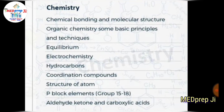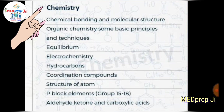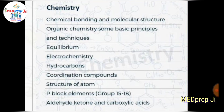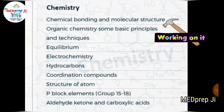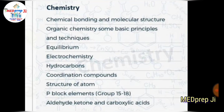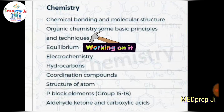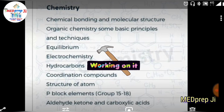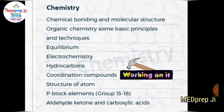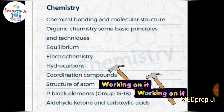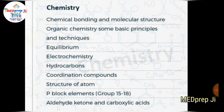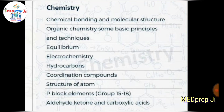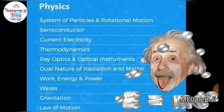In Chemistry: rank first goes to Chemical Bonding and Molecular Structure — a very important topic; rank two goes to Organic Chemistry: Some Basic Principles and Techniques, which is the core of organic chemistry, do not skip this; rank third goes to Equilibrium; rank four goes to Electrochemistry; rank five goes to Hydrocarbons; rank six goes to Coordination Compounds; rank seven goes to Structure of Atom; rank seven goes to P-Block Elements and Groups 15 and 18; and rank ninth goes to Aldehydes, Ketones, and Carboxylic Acids.